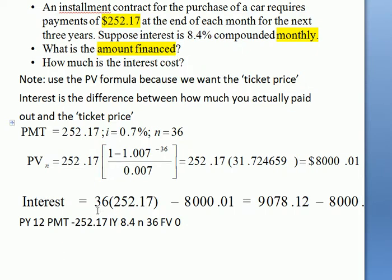You paid out 36 times the payment. So it's n, 3 years, 12 times, 36 times the PMT minus the ticket price. So that's 9078 minus 8,000. That would be the interest, the cost to you of not having $8,000 in your pocket.